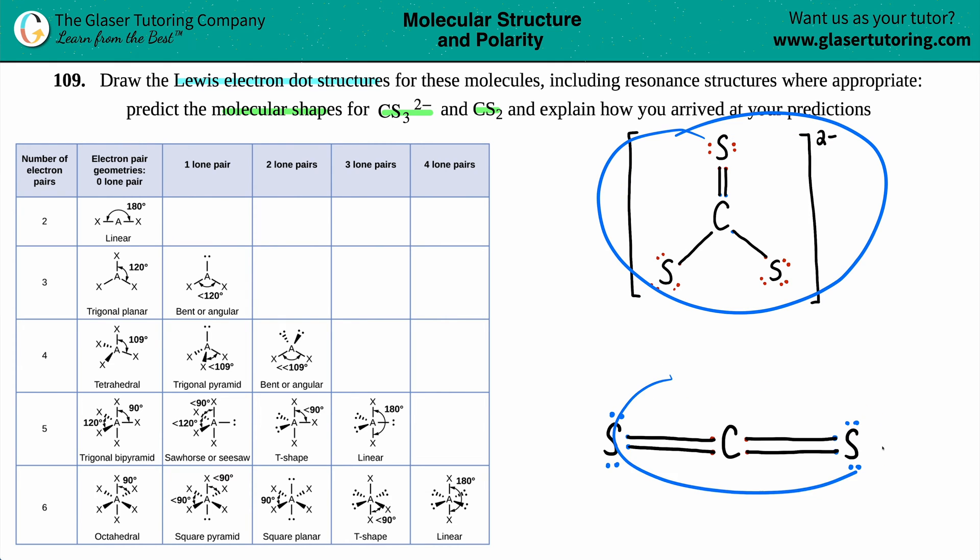Now, we already drew these electron dot structures together in the past video or so. Just check out the videos. I think this one was maybe 109 part A and B. So we did it step-by-step going over there. And this one, we're just going to find out the shapes.